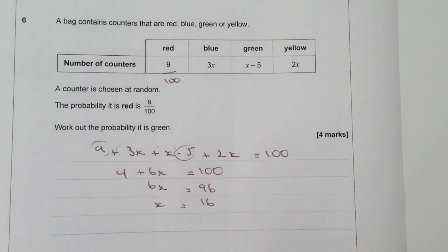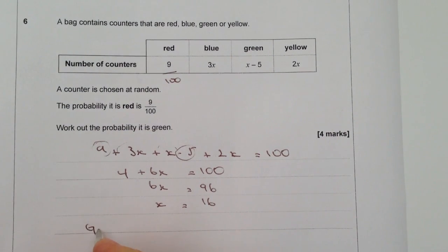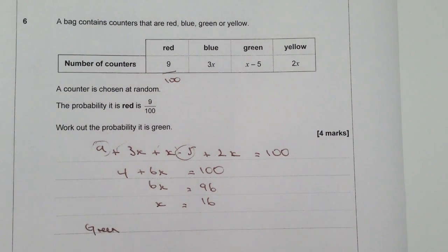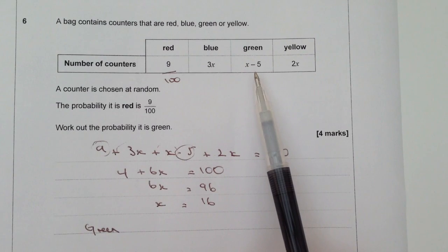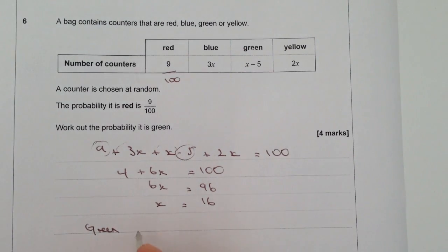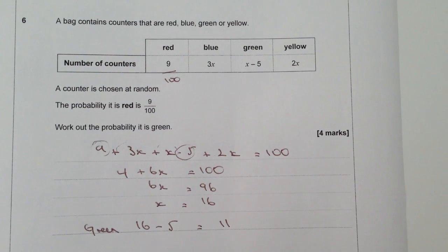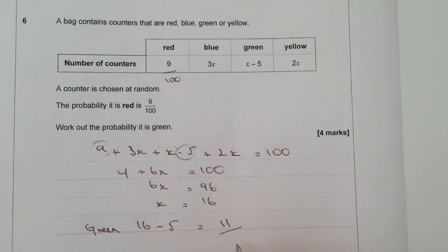Well that's excellent, because if I've got that value of x, I can then work out the probability of green. So the probability of green is going to be, as it says in the chart here, x minus 5. So it's going to be 16 minus 5, which is going to be a probability of 11. Now don't forget it is 11 out of 100, and that would be the answer for this particular question.